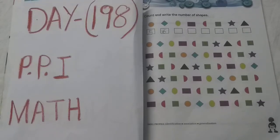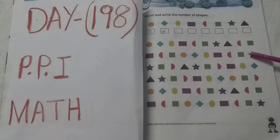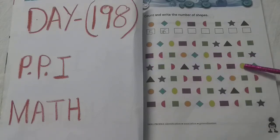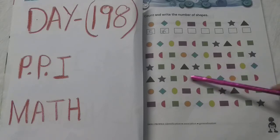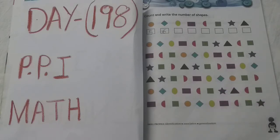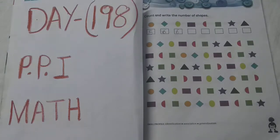See the next shape — oval. So let's count ovals, children: one, two, three, four, five, six. Oval is also six. You can see ovals are also six. So write number six here.